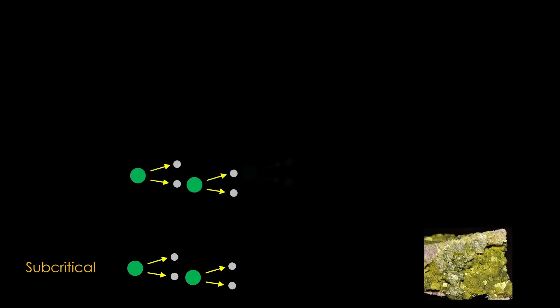In the second case, one of the neutrons from each fission causes another atom to fission, so there is a steady level of fission activity. This is known as critical, and this is where nuclear reactors are operating when they are in a steady state.